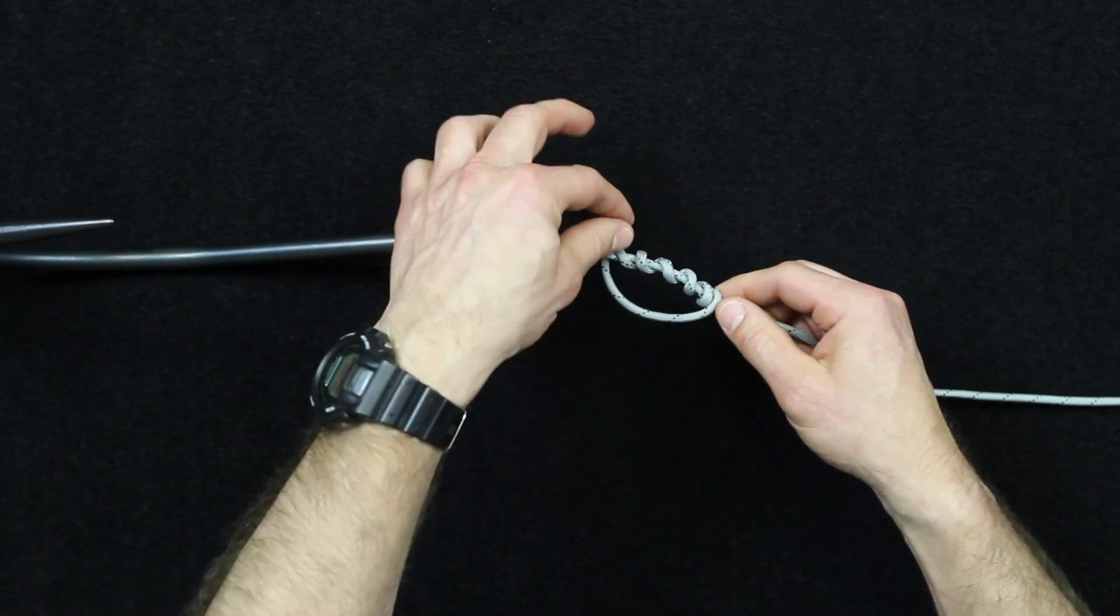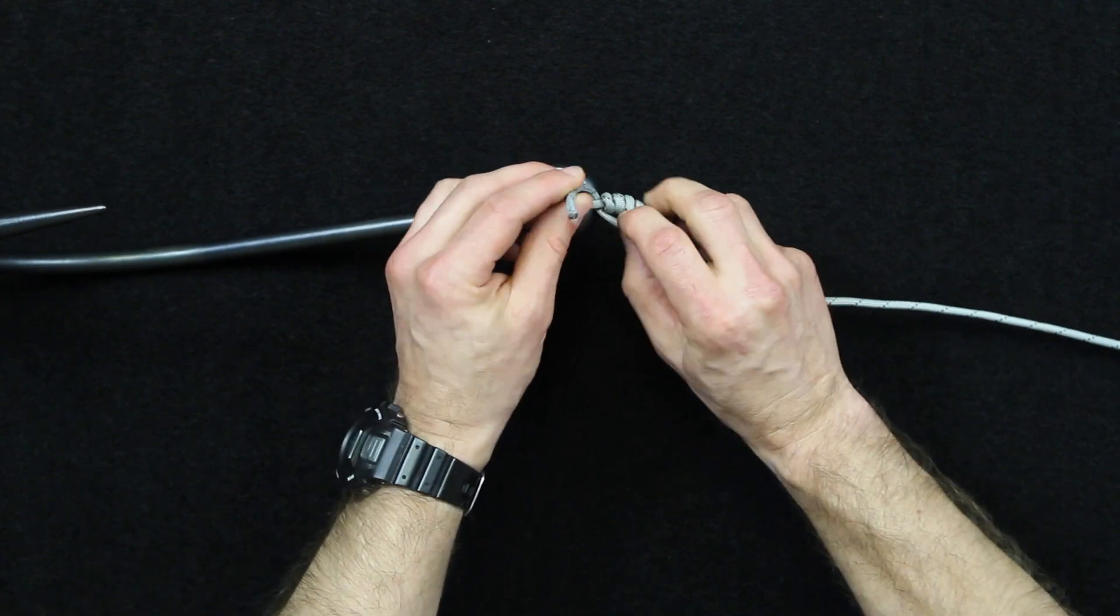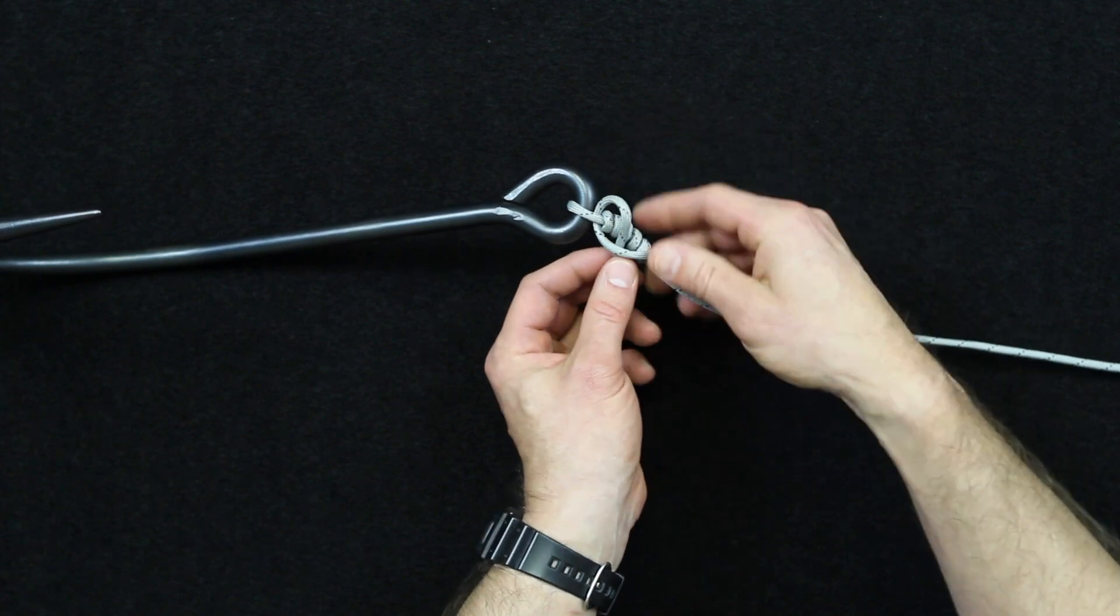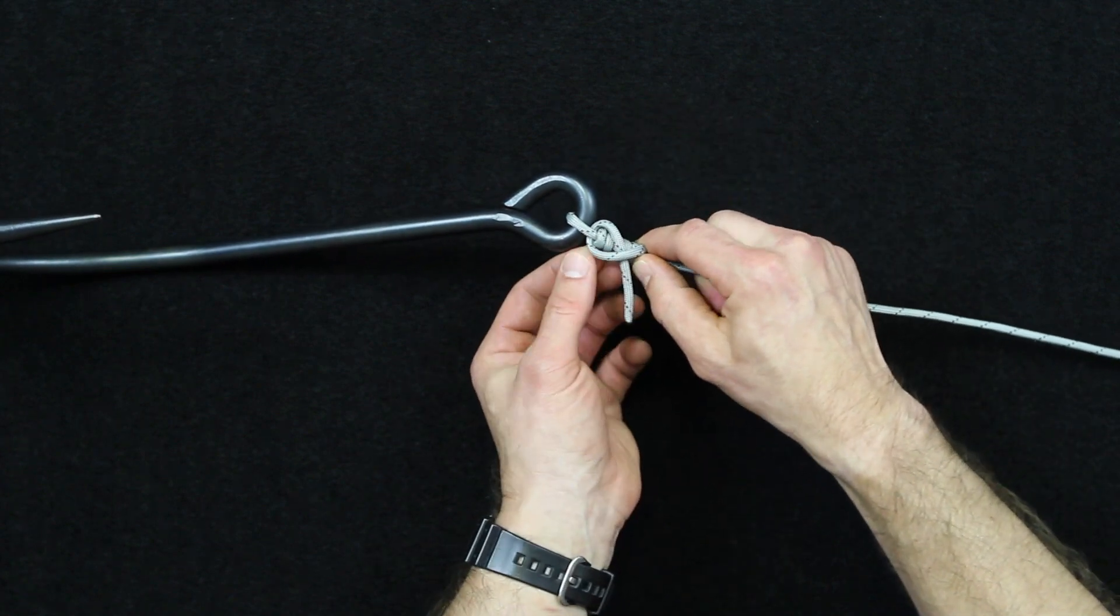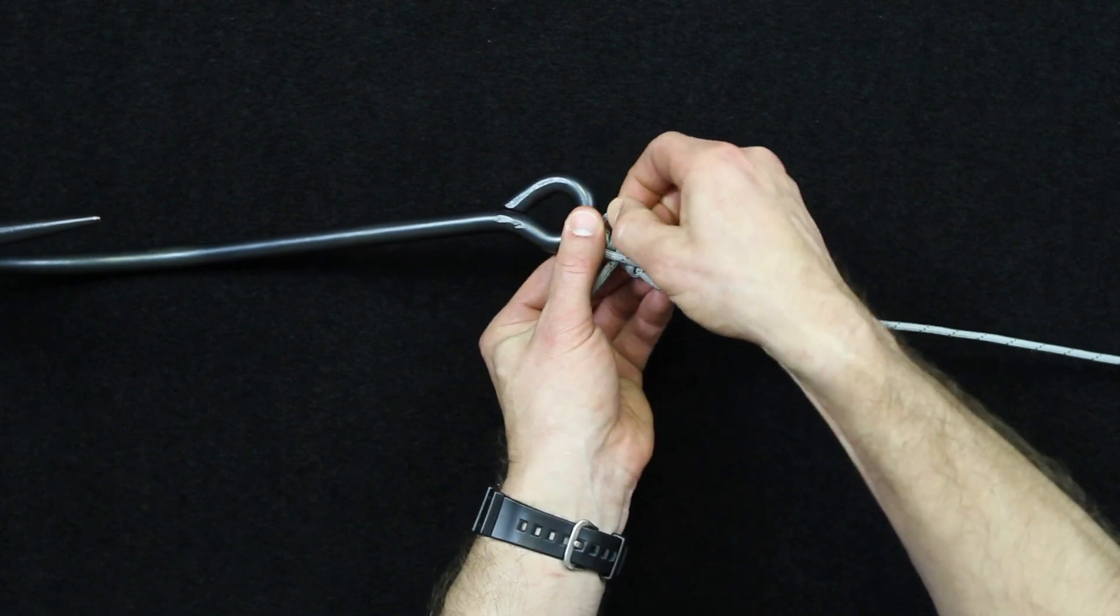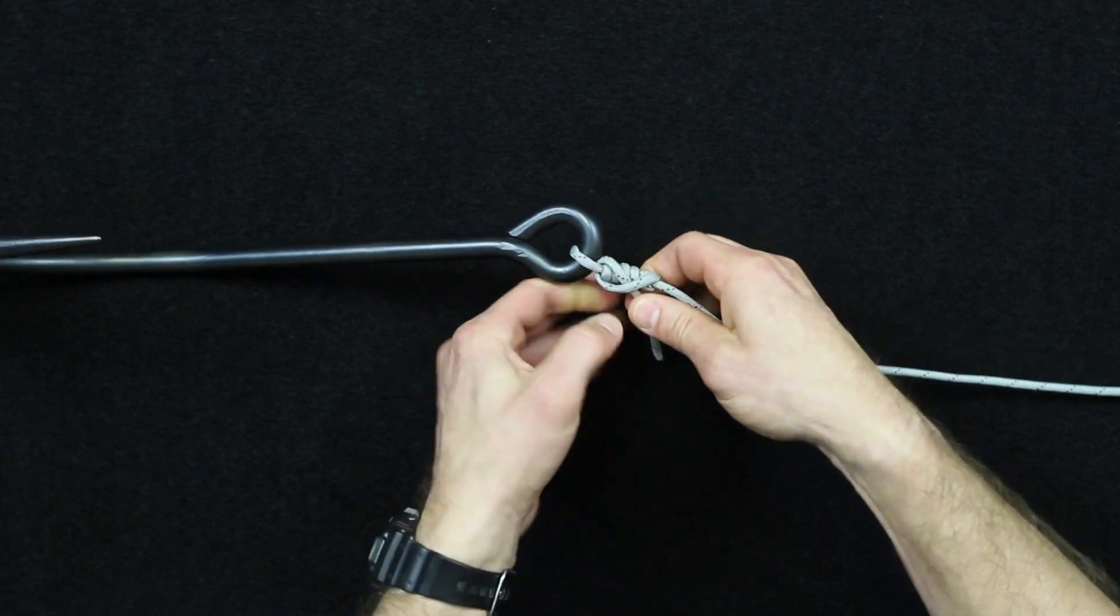Once you get it pushed through and you get these wraps tightened up, the last step is to take it back through itself here. So right there through the standing part of the line and continue tightening up, just like so.